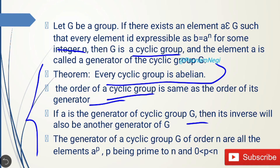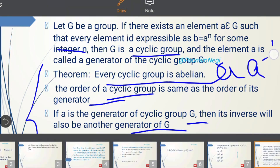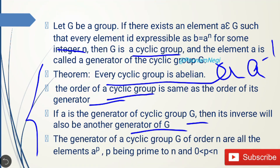The next theorem is: if a is the generator of a cyclic group G, then its inverse will also be another generator of G. This means for any group G, if the generator is a, then a⁻¹ will also be another generator of this group G.